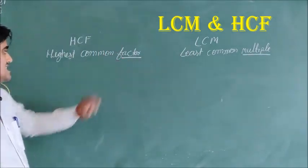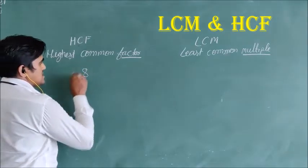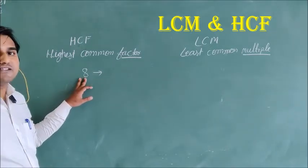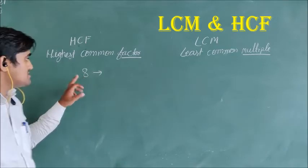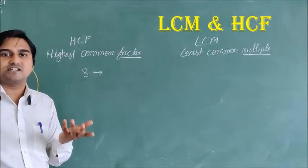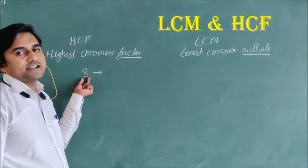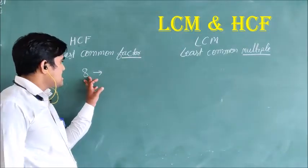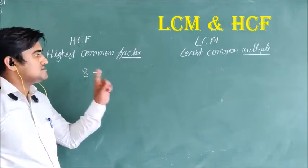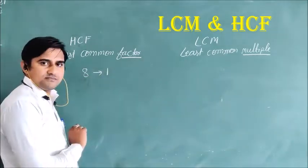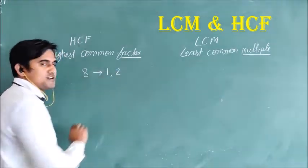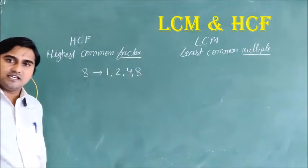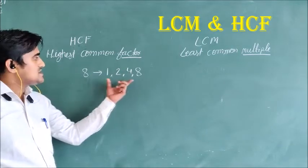For example, let us find the factors of 8. Factor means: 8 is divisible by which numbers? It means 8 comes in which tables. So 8 comes in the table of 1, table of 2, table of 4, and table of 8. So these are the factors of 8.